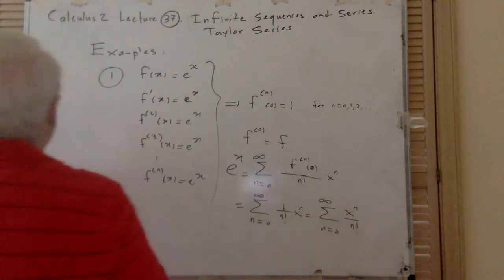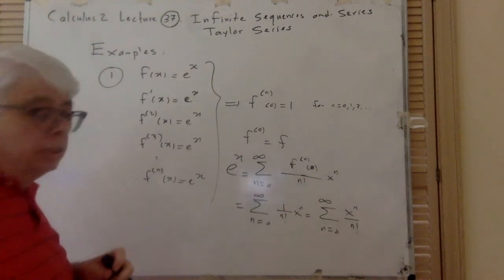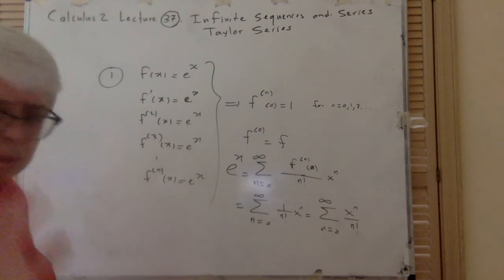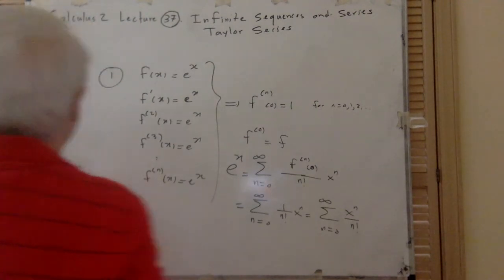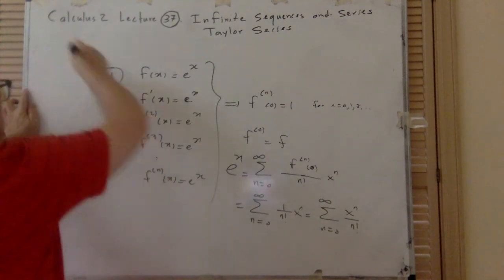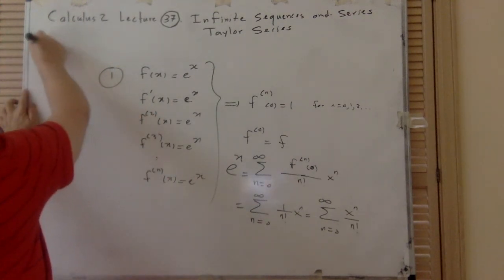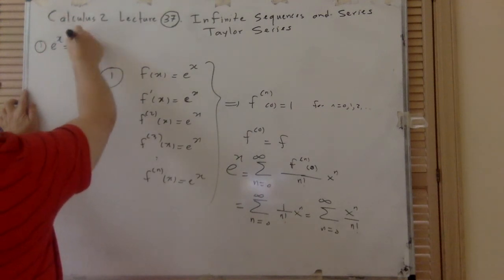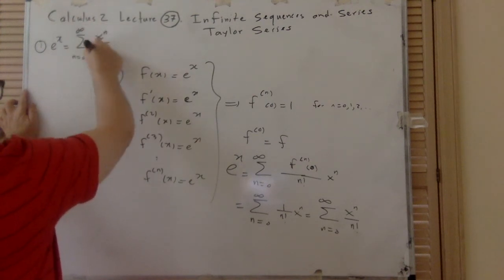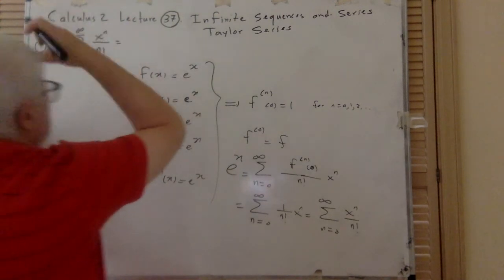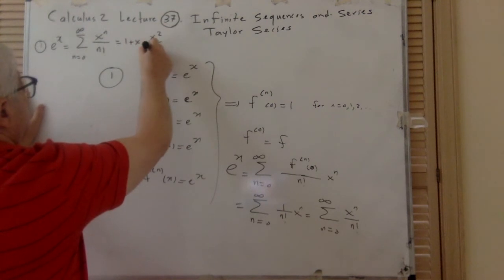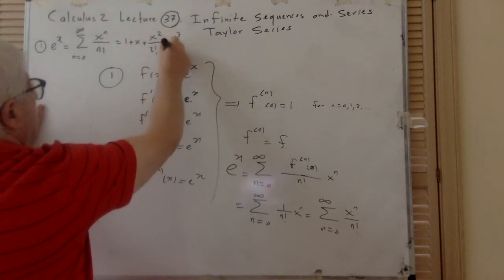This Taylor–Maclaurin series converges for any x. A consequence is e^1 = sigma from n=0 to infinity of 1/n! = 1 + 1 + 1/2! + 1/3! + 1/4! + ... This converges very quickly because the denominator is factorial — factorial grows very large, so 1/(1000!) is basically zero. So this series converges quickly to e.